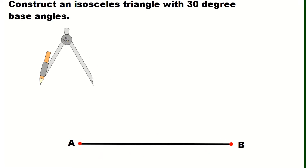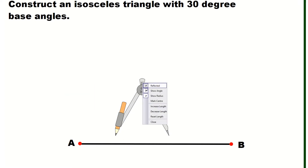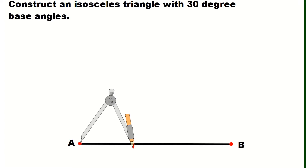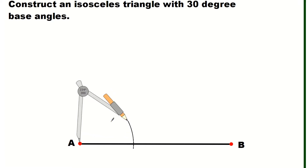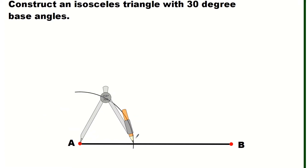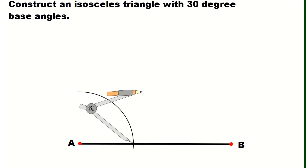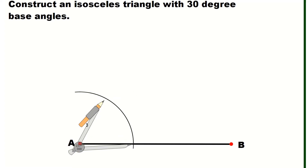We will first construct a 30-degree angle using this compass. First, I'll draw an arc. Then, without changing the compass setting, I'm going to place the pointer on the intersection of the arc and the segment and then draw an arc intersecting the major arc.